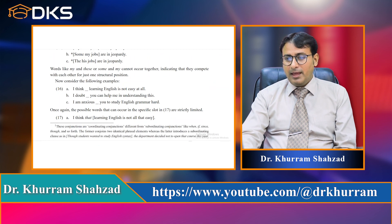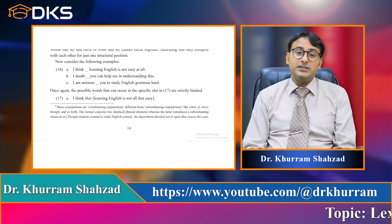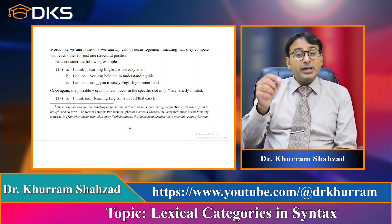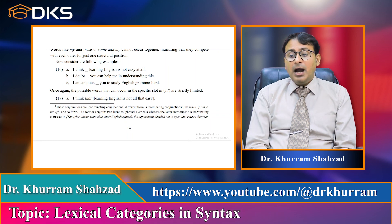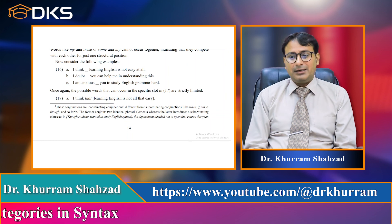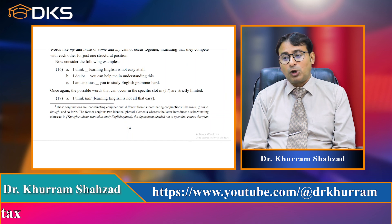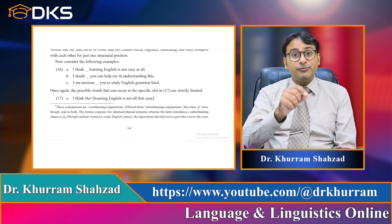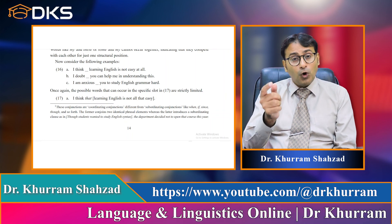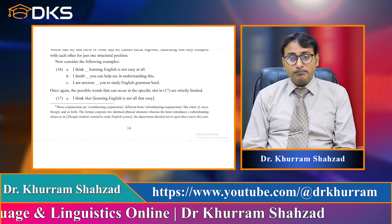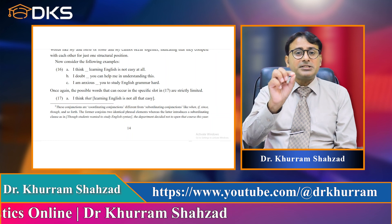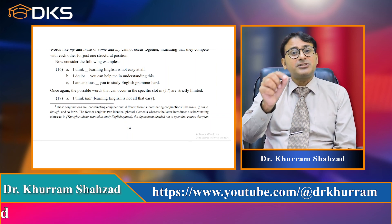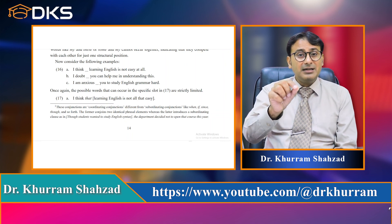Consider the following examples: 'I think that learning English is not easy at all' — here 'that' can come. 'I doubt if you can help me in understanding this' — 'if' or 'whether' can come. 'I am anxious for you to study English grammar hard' — here only 'for' can come. The possible words that can occur in those specific slots are strictly limited. In example 16a, only 'that' can come. In 16b, only 'if' or 'whether' can come. In 16c, only 'for' can come. After 'that' and after 'if' or 'whether,' a tensed clause comes — a clause telling us about time.